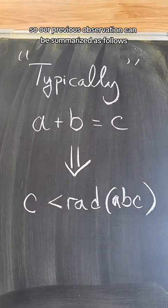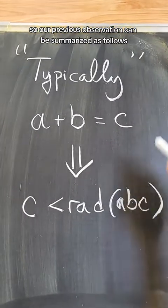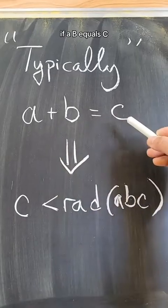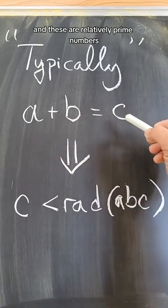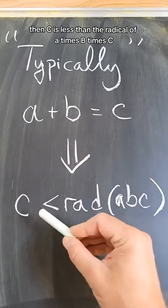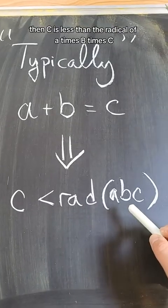So, our previous observation can be summarized as follows, that typically, if a plus b equals c, and these are relatively prime numbers, then c is less than the radical of a times b times c.